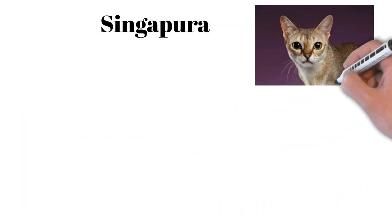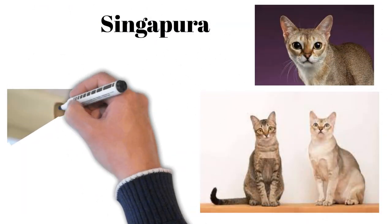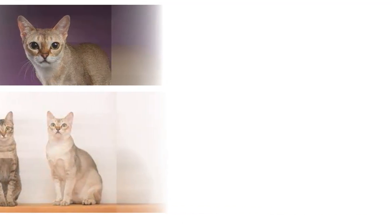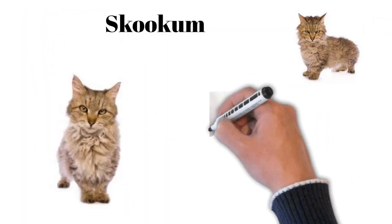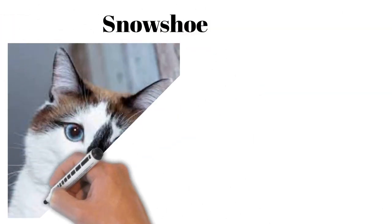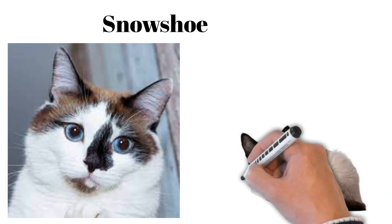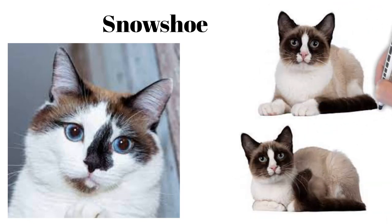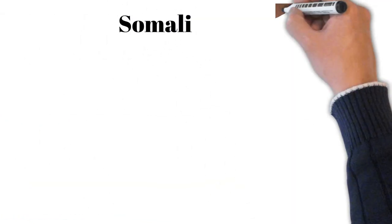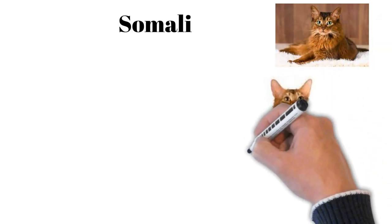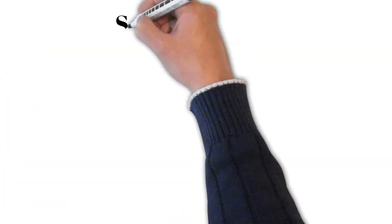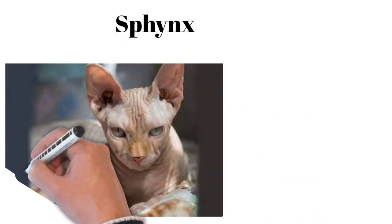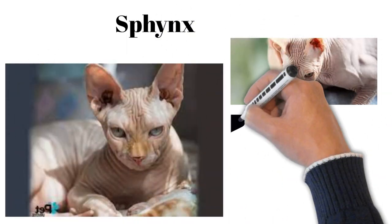Singapura: one of the smallest breeds, playful, loves warm spots. Skookum: short legs, curly coat, playful, affectionate. Snowshoe: rare, white feet, affectionate, and enjoys human company. Somali: long-haired Abyssinian, bushy tail, playful, intelligent. Sphynx: hairless, warm to touch, loves attention, highly social.